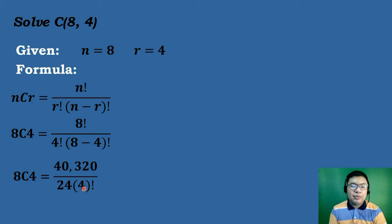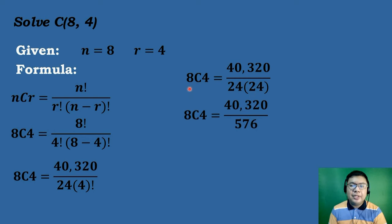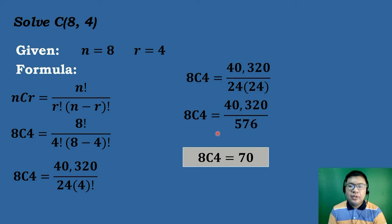8 minus 4 equals 4, followed by the factorial symbol, which is also 24. So we have 8C4 equals 40,320 over 24 times 24, which is equal to 576. Then 40,320 divided by 576 equals 70. Therefore, the combination of 8 objects taken 4 at a time is equal to 70.